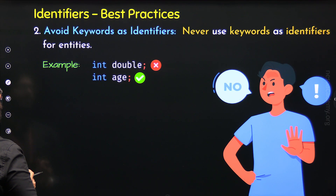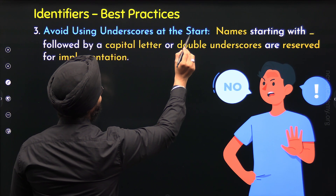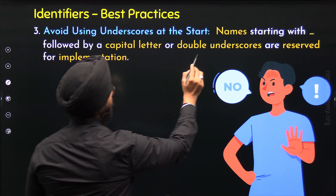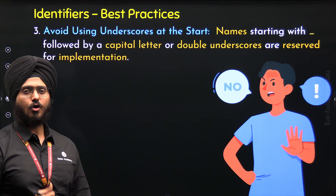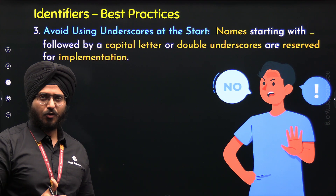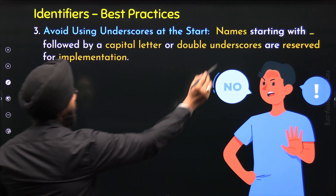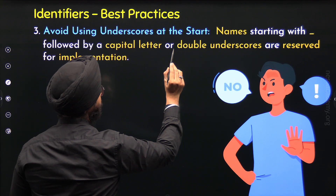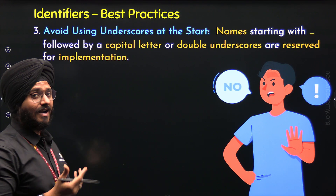The third best practice is: avoid using underscores at the start. Names starting with an underscore followed by a capital letter, or names starting with double underscores, are reserved for implementation — meaning the operating system and compiler. These are responsible for implementing our code, that's why we call them implementation. So we must not use such names for identifiers.